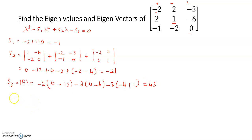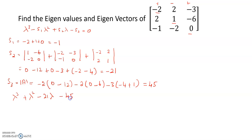Now the characteristic equation is: lambda cubed plus lambda squared minus 21 lambda minus 45 equals 0. Let's find the roots using the synthetic division method.